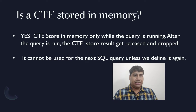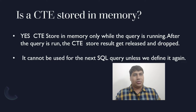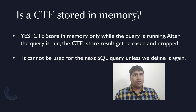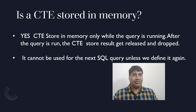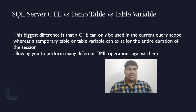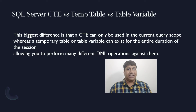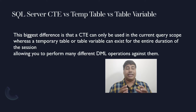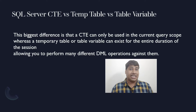After the query runs, the CTE stored result gets released and dropped — it cannot be used for the next SQL query unless we define it again. The biggest difference is that a CTE can only be used in the current query scope, whereas a temporary table or a table variable can exist for the entire duration of the session.